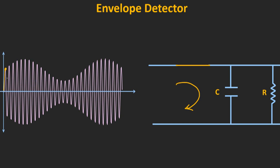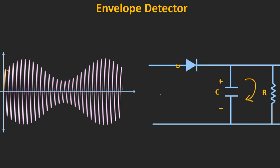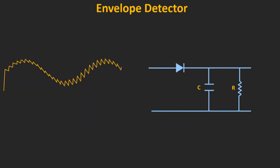After the input signal reaches its peak and starts reducing, when the input signal is less than the voltage across the capacitor, the diode becomes reverse biased and acts as an open circuit. The capacitor then discharges through the resistor. Once the input voltage again crosses the capacitor voltage, the diode conducts again and the capacitor follows the input back up to the peak. This same procedure repeats, producing the envelope waveform at the output across the resistor.